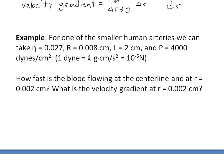To illustrate this blood flow concept, we'll look at an example for one of the smaller human arteries. We can take the viscosity to be 0.027, the radius of the artery to be 0.008 centimeters, the length 2 centimeters, and the pressure equals 4000 dynes per centimeter squared. A dyne is a unit of force equal to 1 gram times centimeters divided by seconds squared, or 10 to the power of negative 5 newtons.